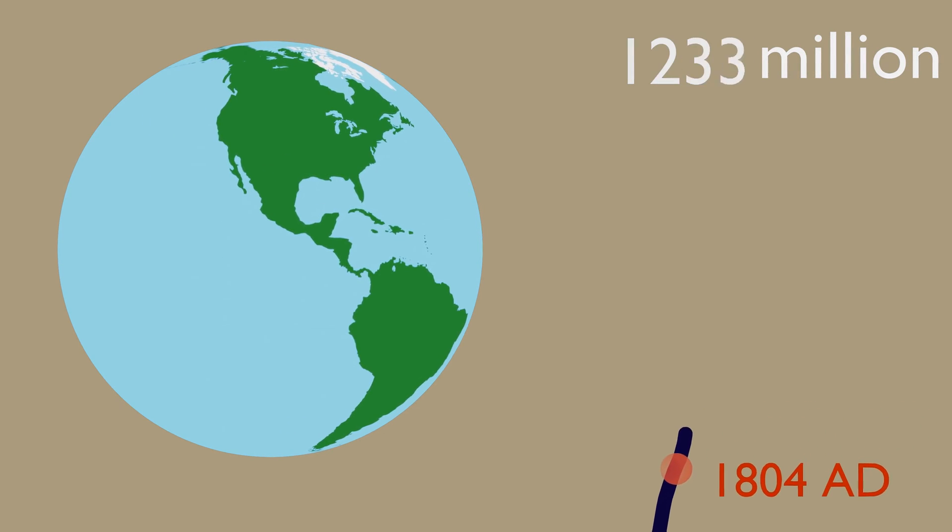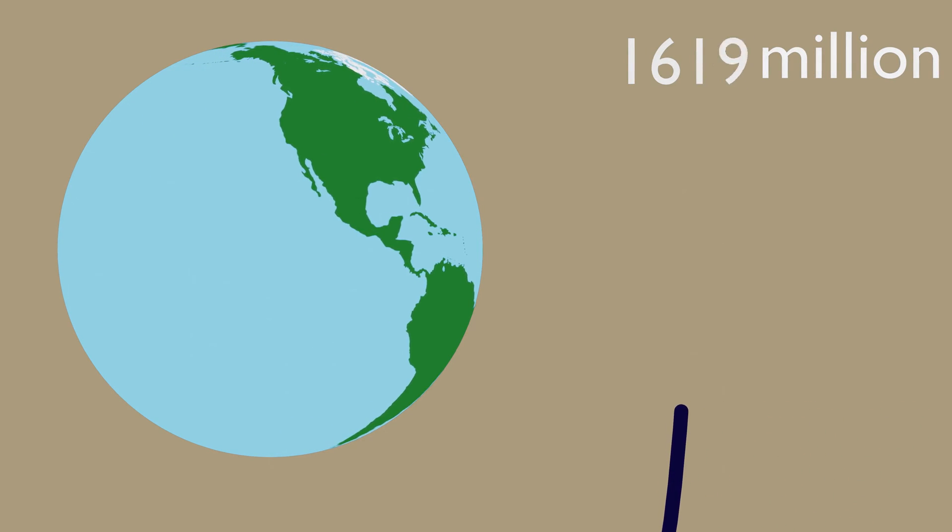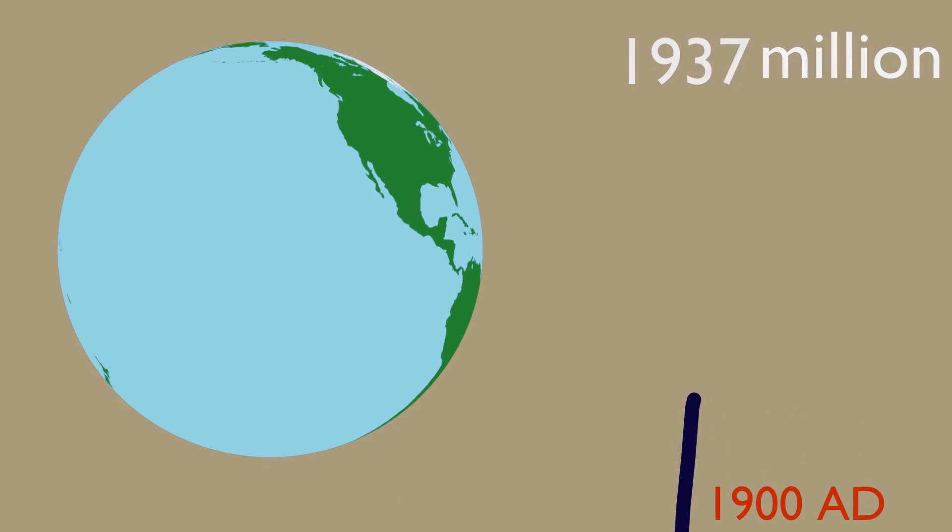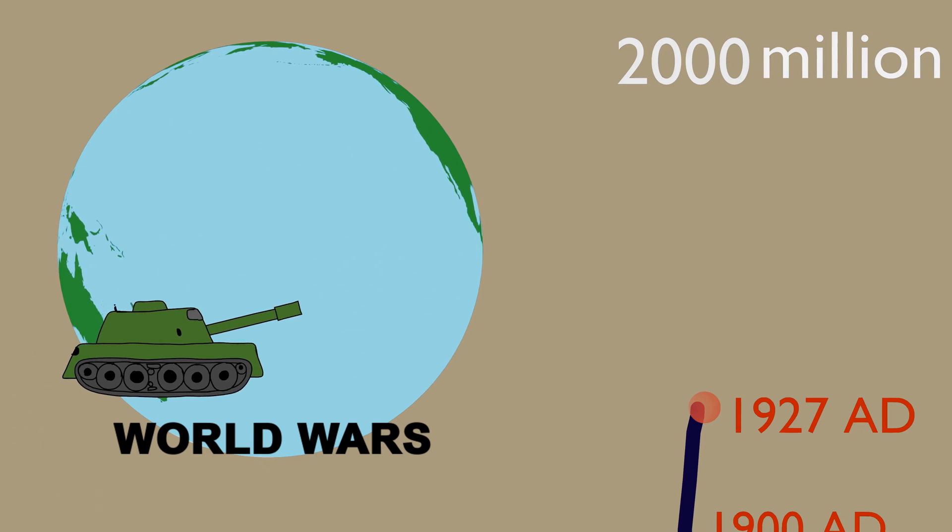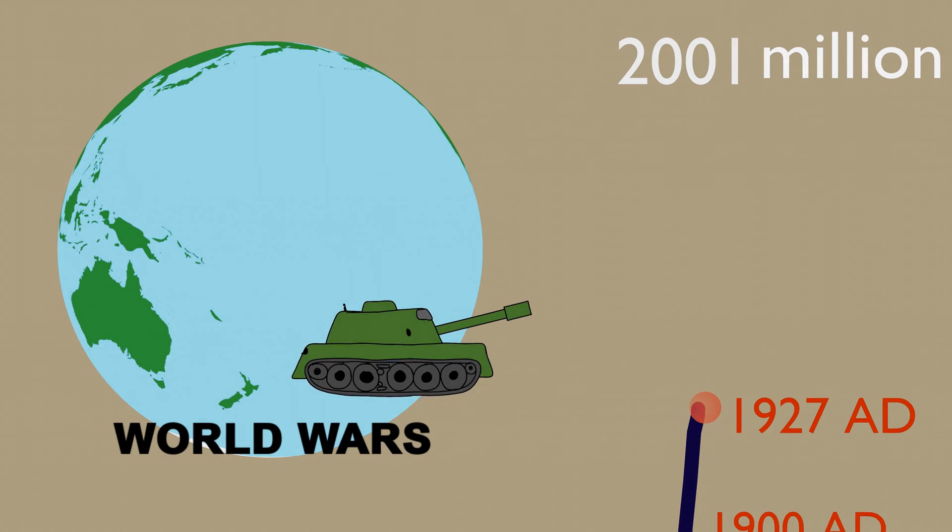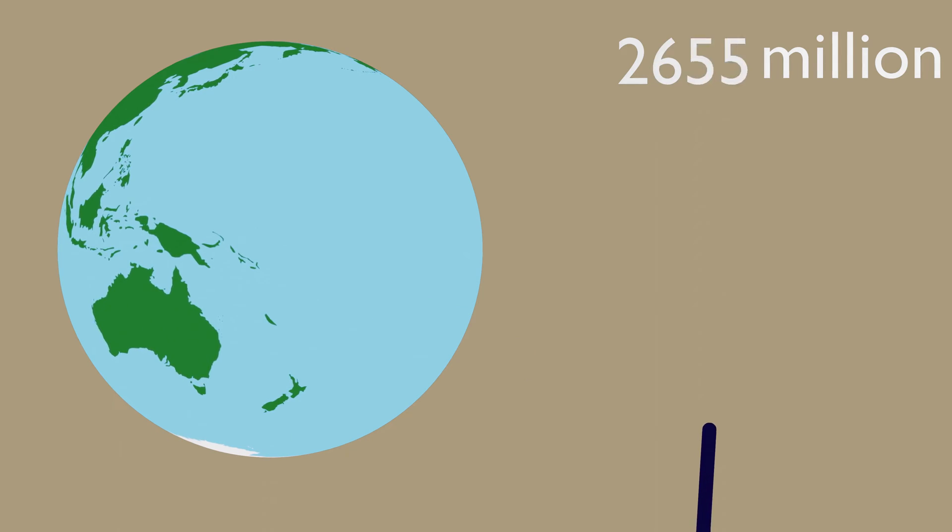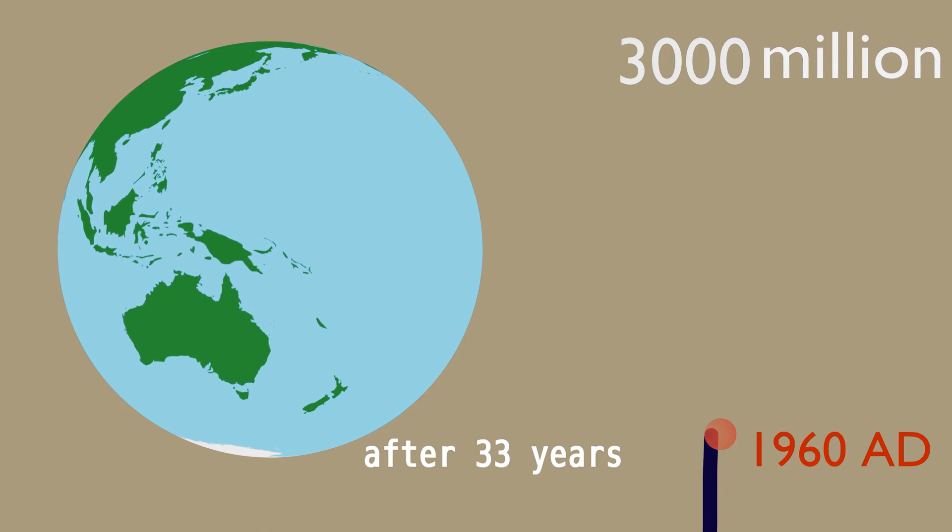After only 123 years, human population reached the second billion. Industrialization and the green revolution caused the increased speed of population growth. In 1960, world population reached the 3 billion mark.